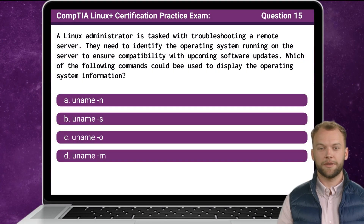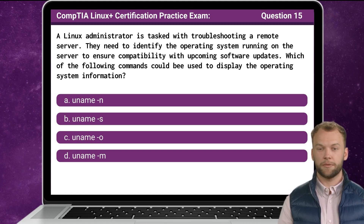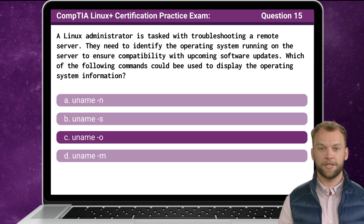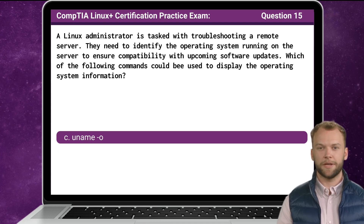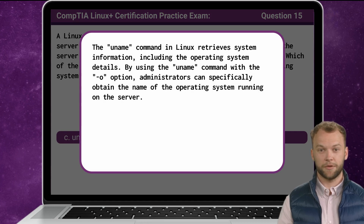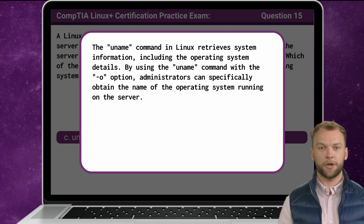Question 15. A Linux administrator is tasked with troubleshooting a remote server. They need to identify the operating system running on the server to ensure compatibility with upcoming software updates. Which of the following commands could be used to display the operating system information? The answer is C: uname -o. The uname command in Linux retrieves system information, including operating system details. By using the uname command with the -o option, administrators can specifically obtain the name of the operating system running on the server.